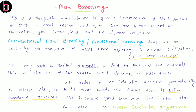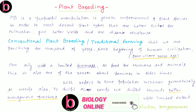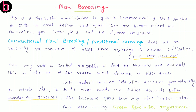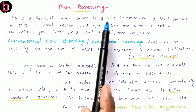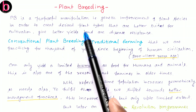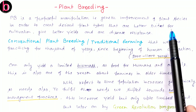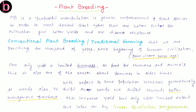As we already know, plants are the primary producers. They do not produce for themselves only but also for others. Here we discuss how by using plant breeding we can improve productivity. Plant breeding is a purposeful manipulation — that is, genetic improvement of plant species in order to create desired plant types that are better suited for cultivation.